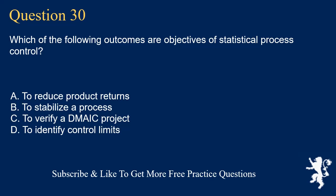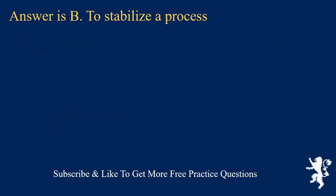Question 30. Which of the following outcomes are objectives of statistical process control? A. To reduce product returns. B. To stabilize a process. C. To verify a DMAIC project. D. To identify control limits. Answer is B. To stabilize a process.